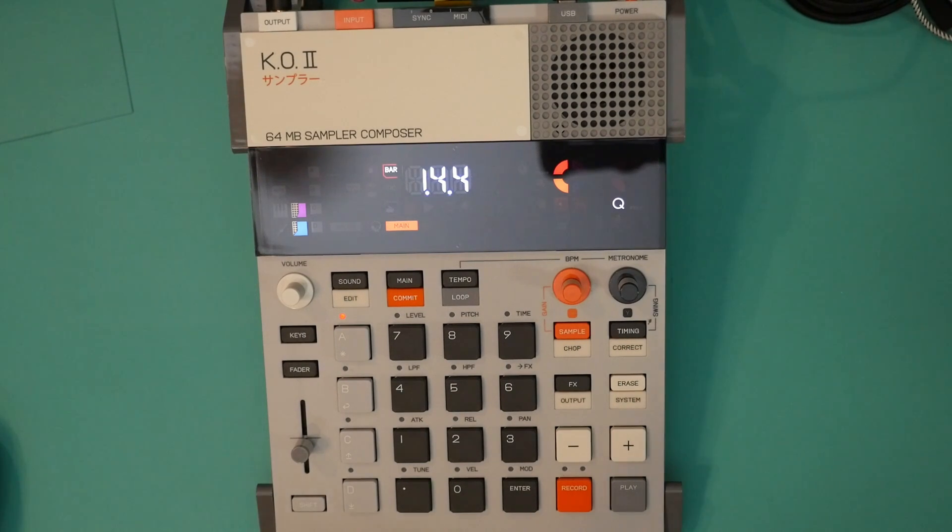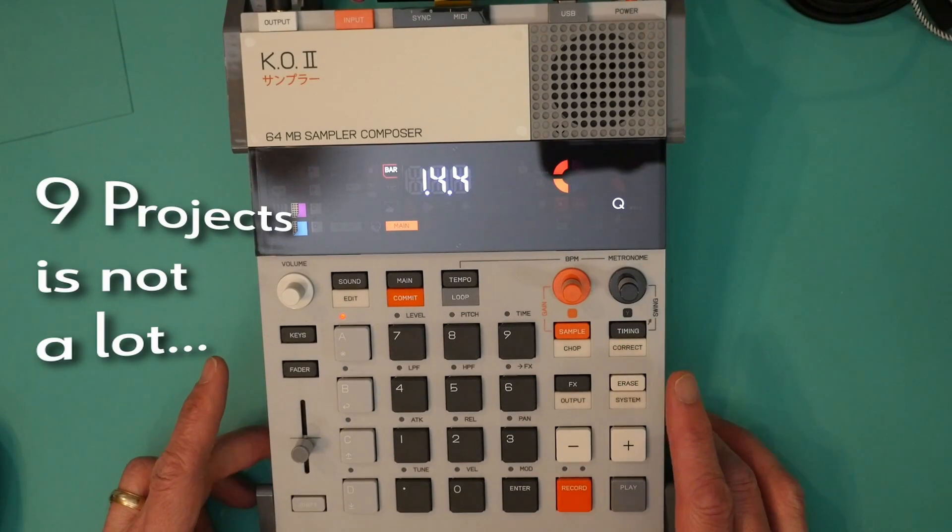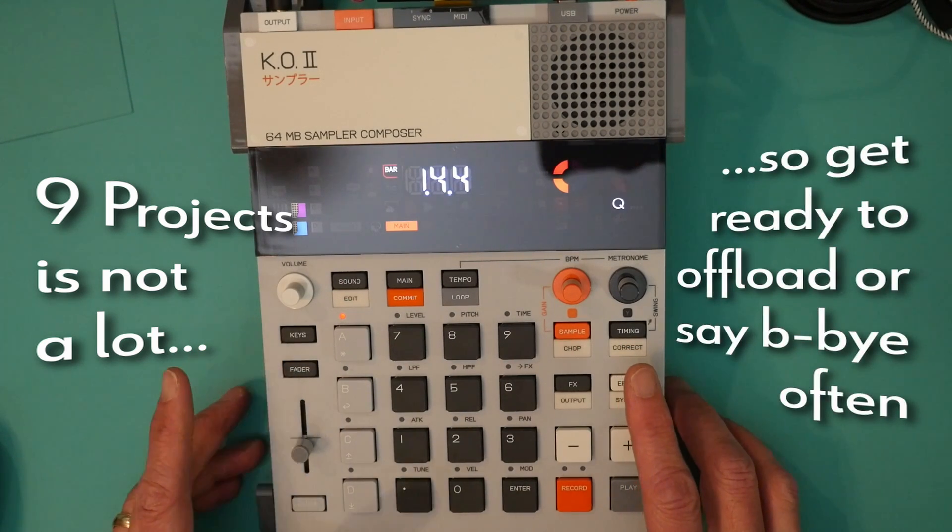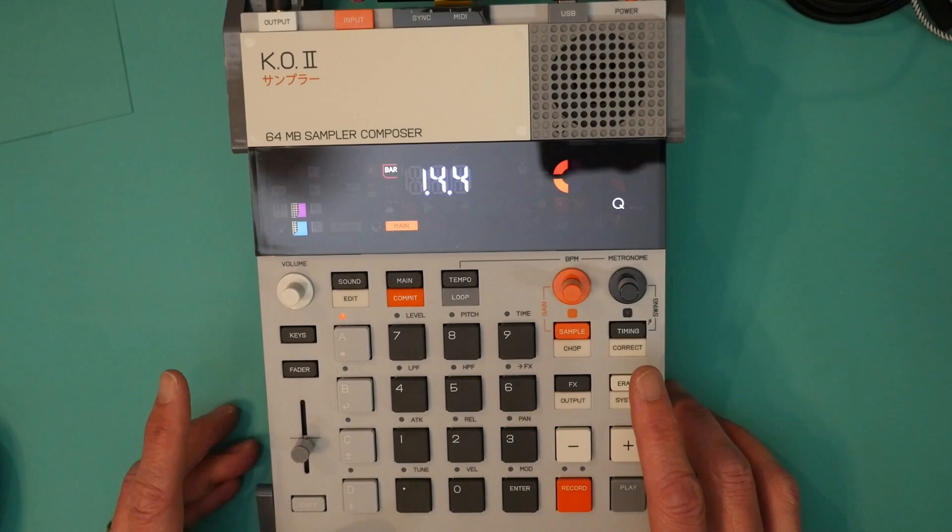First, let's make sure we're starting with a blank project. Now since I've been pretty busy on my KO2, all my nine projects are full. But I have a couple that I recorded into Ableton and a couple that just stink. So we'll erase a project to start.